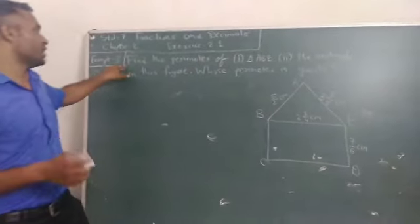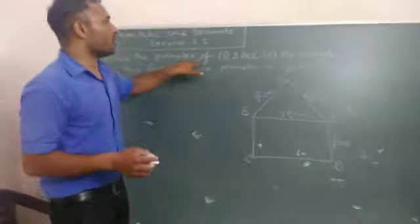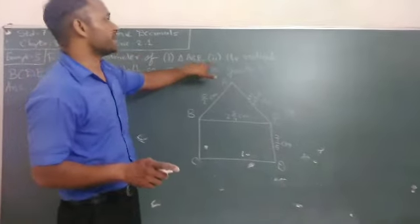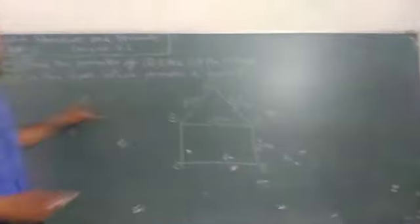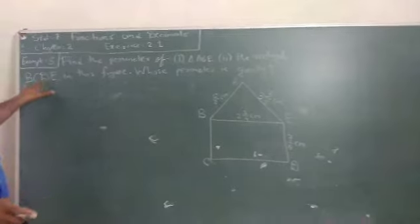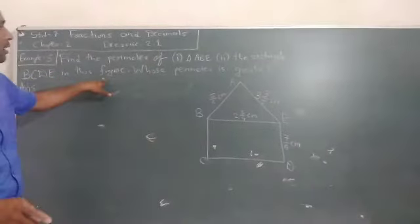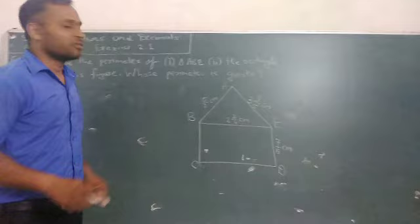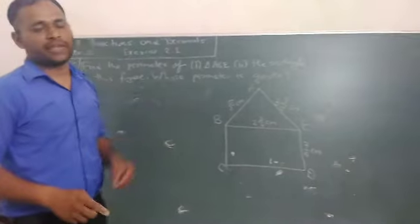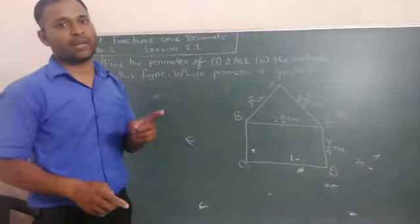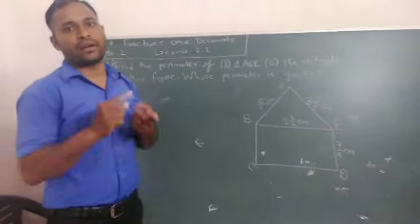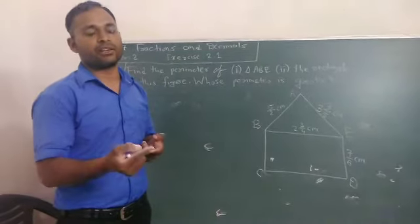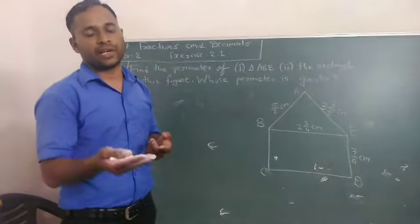The question is: find the perimeter of, first, triangle ABE, and second, rectangle BCDE in this figure, and whose perimeter is greater. There are two questions: first, find the perimeter of the rectangle and also the triangle. And the second question is which is greater.